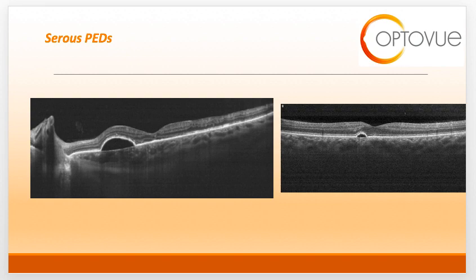The other common entity in the category of subretinal and RPE disease is pigment epithelial detachment. Retinal PEDs result from a separation between the RPE and Bruch's membrane. PEDs can occur in isolation or alongside entities such as CSR and AMD. There are various types of PED, including serous, drusenoid, and vascular. Regardless of classification, each results in an upward displacement of the RPE.